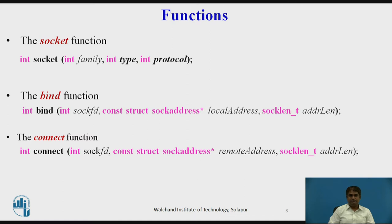The connect function is used to add a remote socket address to the socket structure. It returns minus one if the connection fails. The prototype is shown here. The arguments are the same except that the second and third arguments define the remote address instead of the local one.